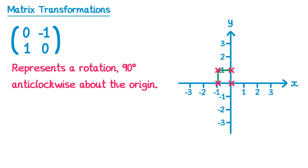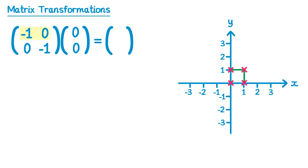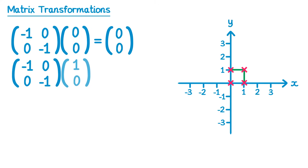And there's only one more matrix you need to know. For the matrix [-1 0; 0 -1]: (0,0) goes to (0,0), and (1,0) goes to (-1,0). This represents a rotation of 180 degrees about the origin.